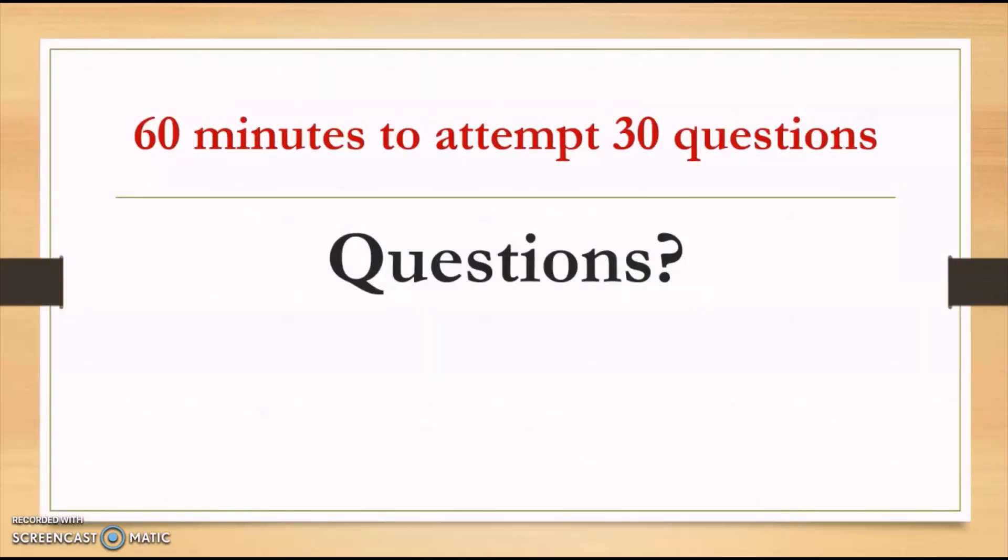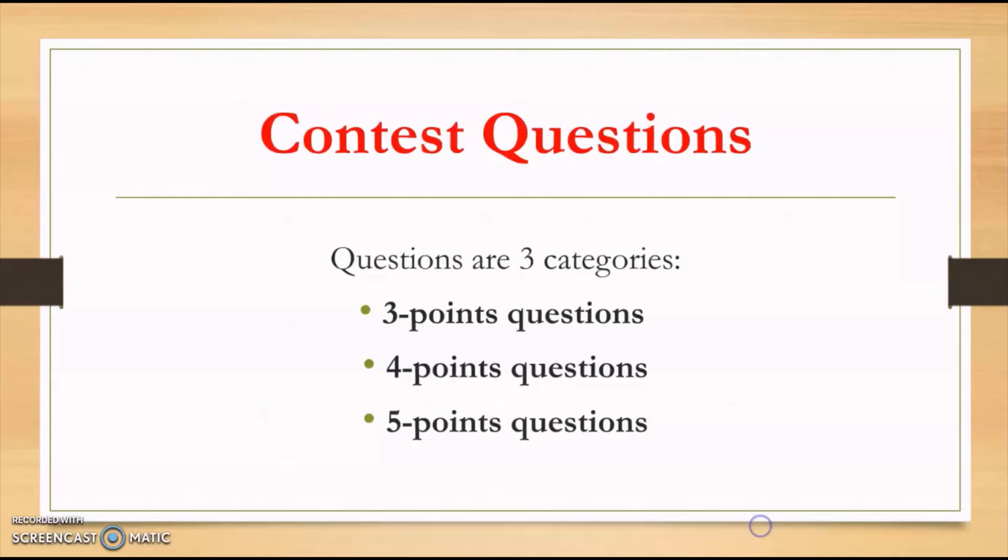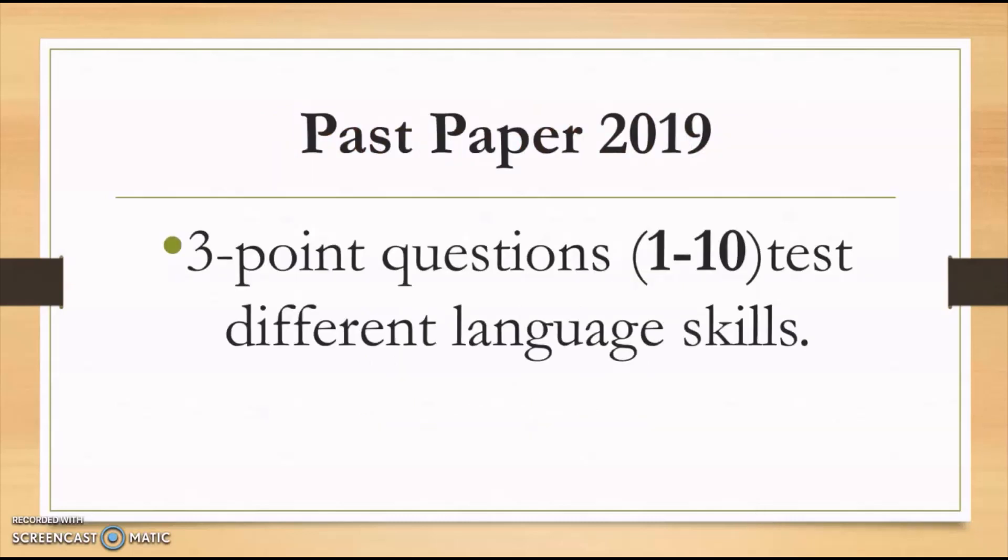For this multiple choice questionnaire, you have 60 minutes to attempt 30 questions and the contest questions are divided into three types. Three, four and five point questions are given to you. For better understanding, I will refer back to the past paper of 2019 for the junior level.